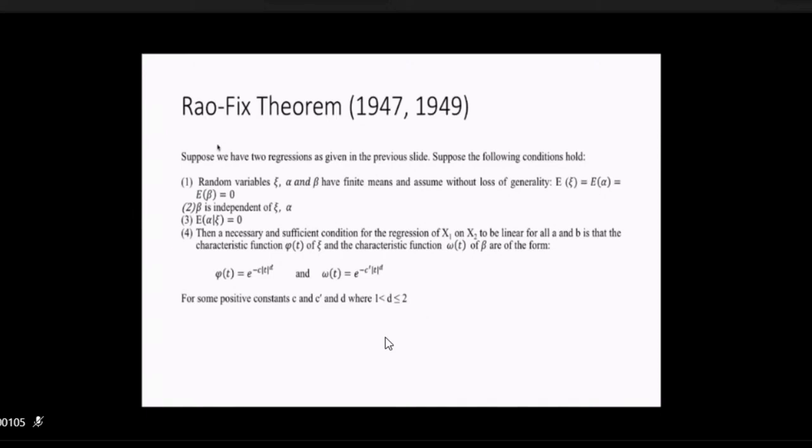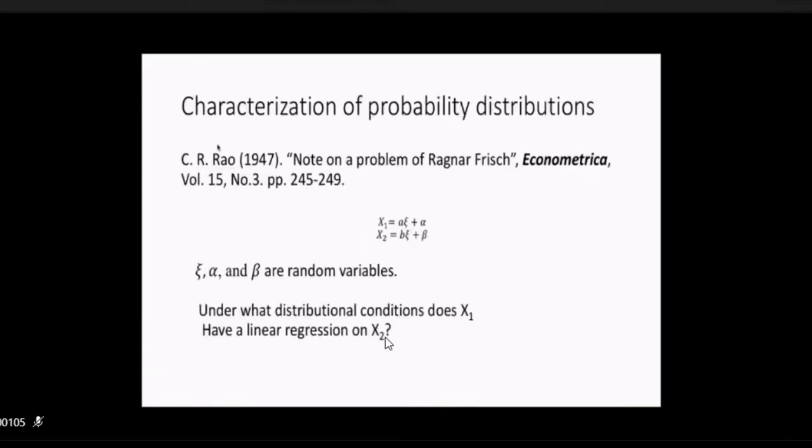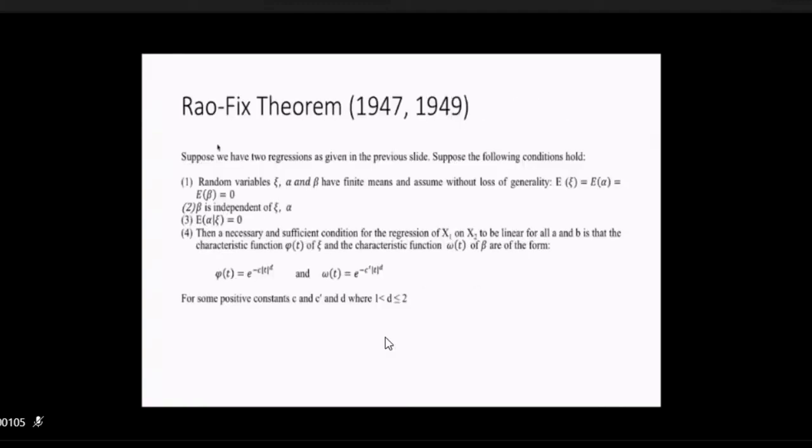So the problem solution was answered like this. Random variables ξ, α and β have finite means, assume. Assume that without loss of generality, those means are equal to zero. Assume that β is independent of ξ and α. And expected value of α given ξ is equal to zero. So then a necessary and sufficient condition for the regression of X1 and X2 to be linear for all A and B is that the characteristic function φ(t) of ξ and the characteristic function ω(t) of β are of the form given in the slide, e to the power minus C absolute value of t raised to the power D and the other one is C prime, more or less similar.